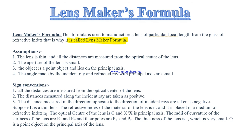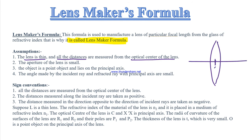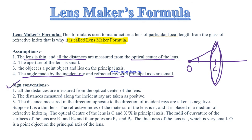The lens maker's formula also has some assumptions and sign conventions. First, the assumptions: the lens needs to be thin so that all distances are measured from the optical center. The aperture of the lens should be small. The object should be a point object. The angles made by the incident ray and refracted ray with the principal axis should be small angles.